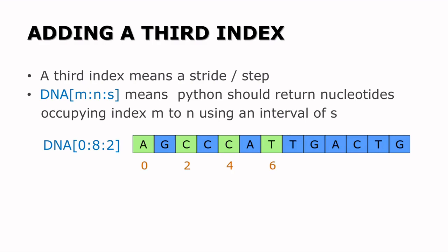Let's look at an example: DNA[0:8:2]. That is giving us a starting index of zero, an ending index of eight, and two becomes the step. What it means is that Python will go to the start index — zero — and then do a jump of two to the next index to extract that nucleotide, and then move on until it gets to the end of the query at eight. Bear in mind here too the N minus one applies, so N minus one gives us seven. But when you do the jump again it goes to nine, which is not in that range, and hence that one is omitted. That is why we have A, C, C, C being returned when we do this query.